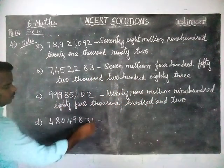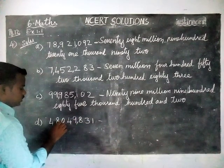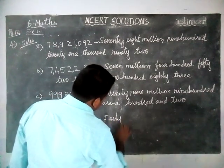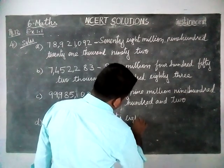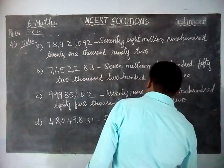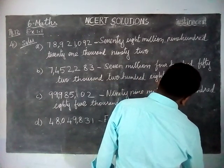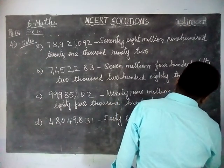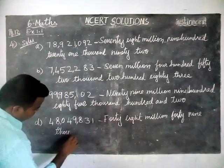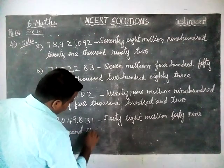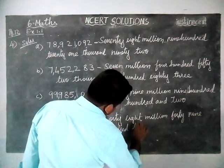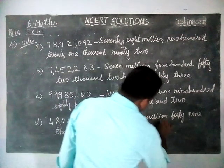Next, the last number. Ones, hundreds, comma, thousands, ten thousands, hundred thousands, comma, millions, ten millions. Forty-eight million, forty-nine thousand, eight hundred thirty-one. So the fourth number is 48,049,831.